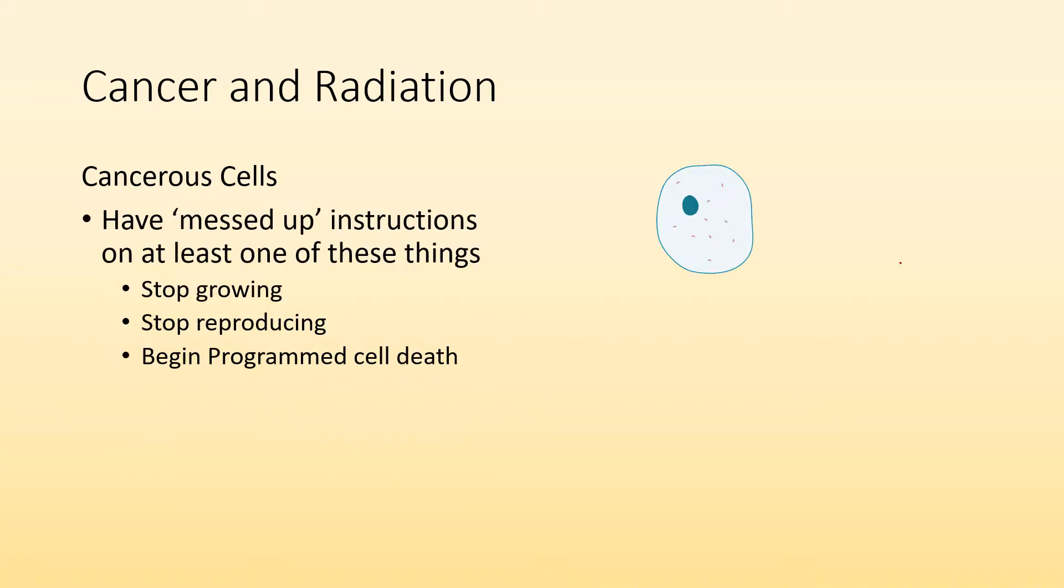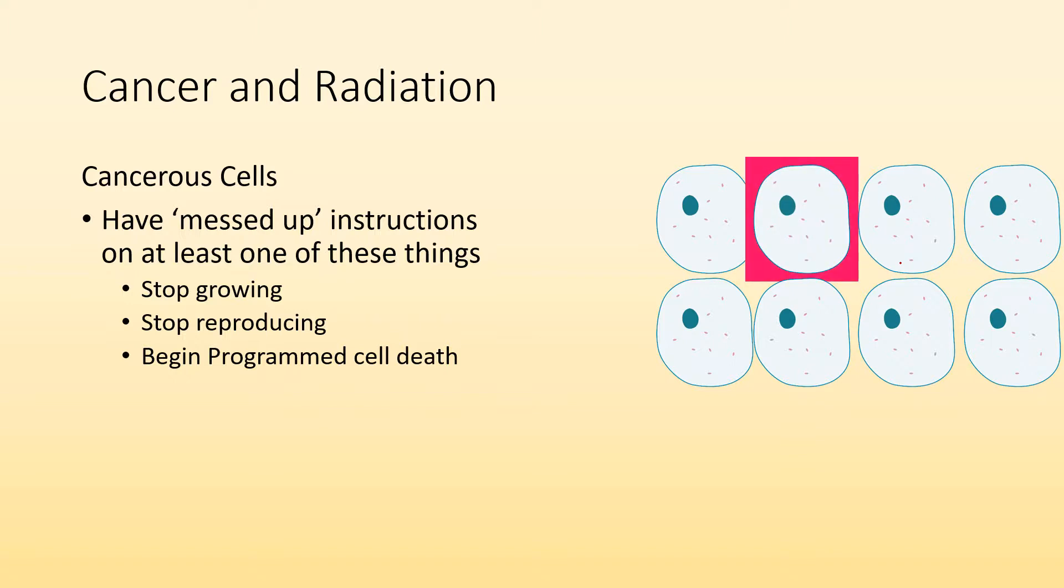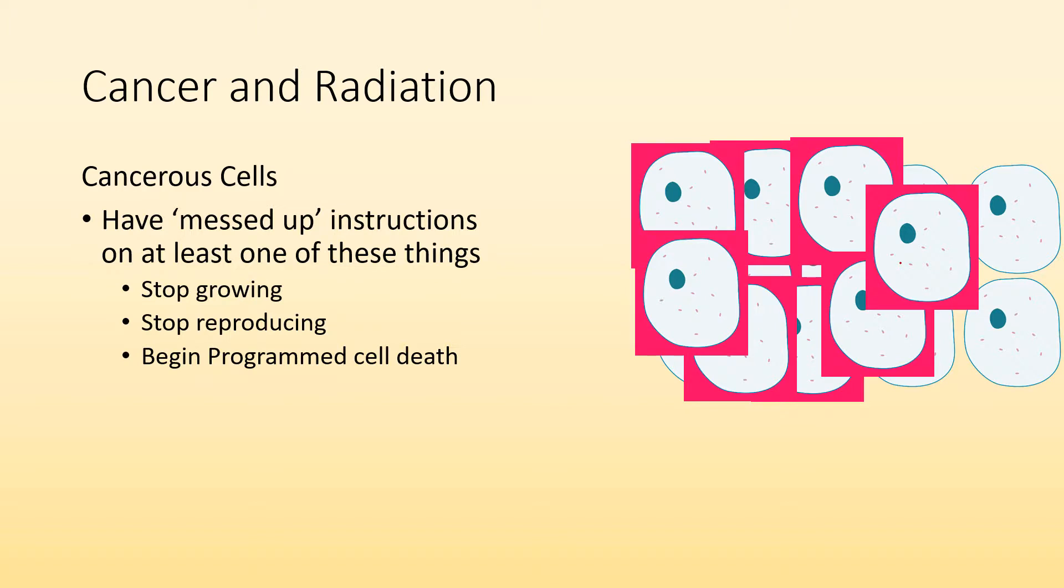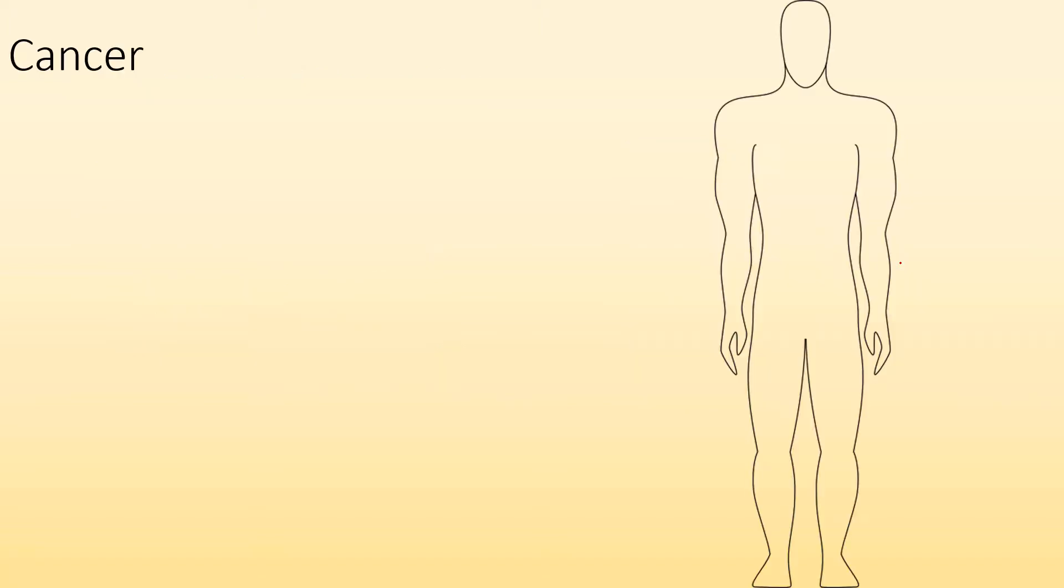So if we're talking about cancer cells, they have messed up instructions on at least one of these things. So they either don't know when to stop growing, they don't know when to stop reproducing, or they've lost the instructions on how to go through programmed cell death. So here's some healthy cells growing, multiplying, reproducing, and then maybe one of those cells was exposed to some ionization radiation and it's messed up one of those instructions on it. So now let's say it doesn't know when to stop growing. It keeps growing, it keeps reproducing. We have this mass of cancerous cells that don't know to stop reproducing. We call that a tumor. So the mass of cells that continue to grow and reproduce is called a tumor. They don't know that they should stop. They lost those instructions.